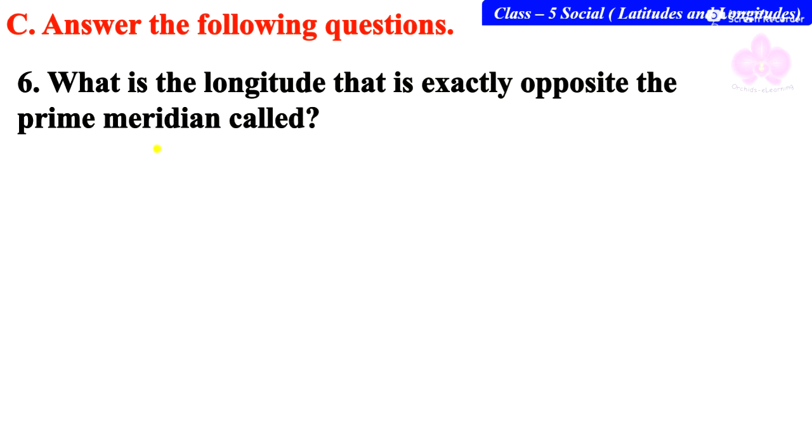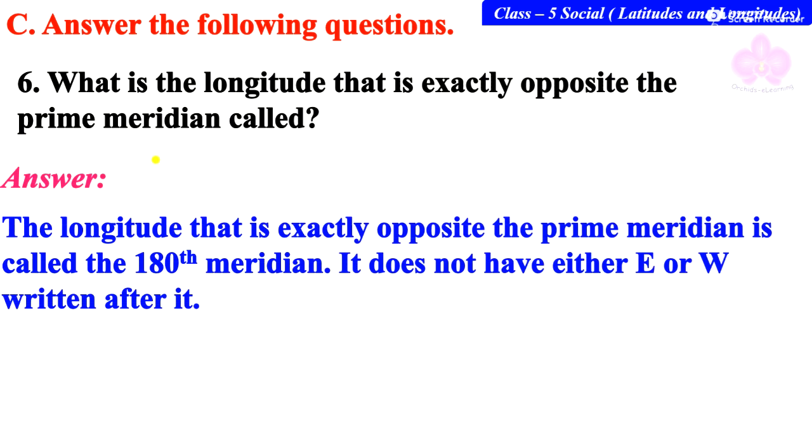What is the longitude that is exactly opposite the prime meridian called? The longitude that is exactly opposite the prime meridian is called the 180th meridian. It does not have either E or W written after it. E means east, W means west.